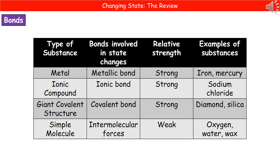Just to give you a bit of a recap on those bonds that we've encountered in our C2 topic: if we've got a metal, then that will have metallic bonds present, and those are strong bonds. If we've got an ionic compound, then it's an ionic bond, and these will again be a strong bond — remember, that's between a metal and a non-metal.